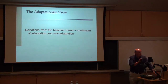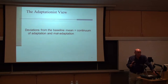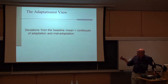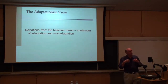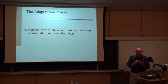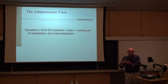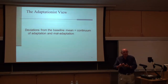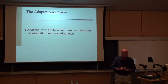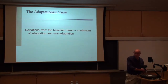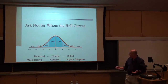From an adaptationist point of view, there are many disorders that can be viewed as an adaptation gone wrong. For me, evolution gives us a sense of what the baseline is, against which we can assess deviations — for the good of the person or to their detriment.